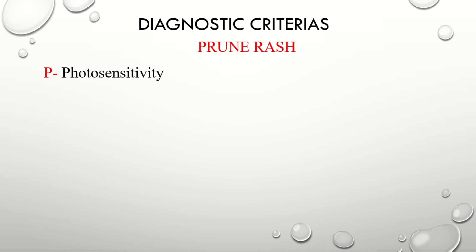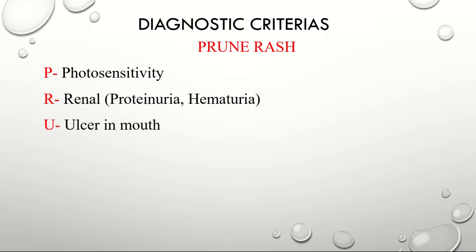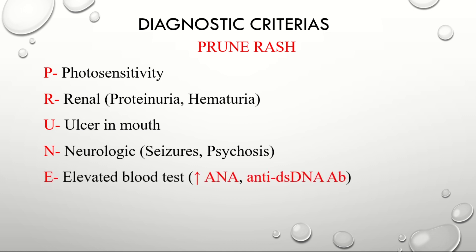P is for photosensitivity. R is for renal manifestations such as proteinuria and hematuria. U is for oral ulcers. N is for neurologic symptoms such as seizures and psychosis. E is for elevated blood tests — specifically, an increase in anti-nuclear antibody and anti-double-stranded DNA antibody.